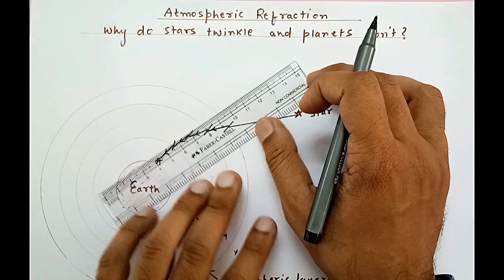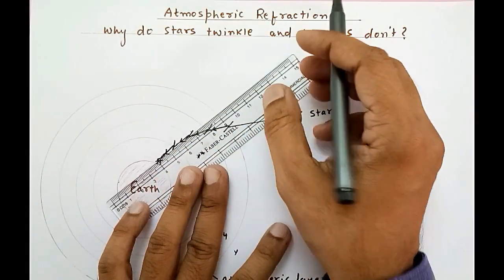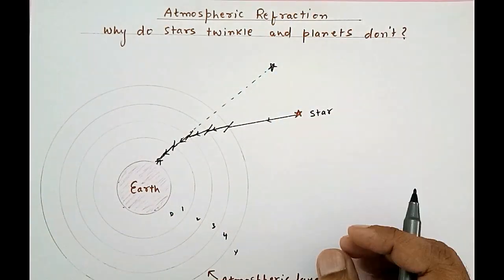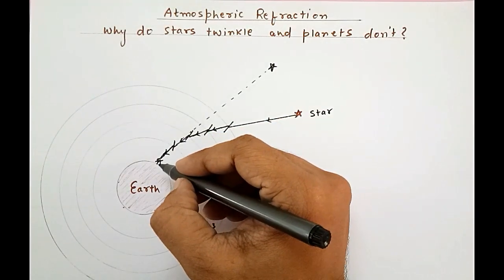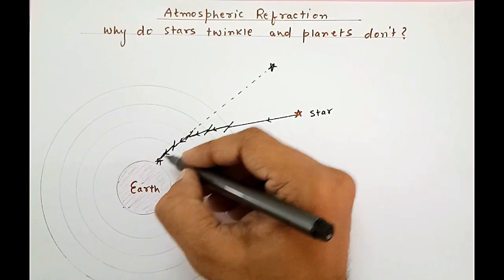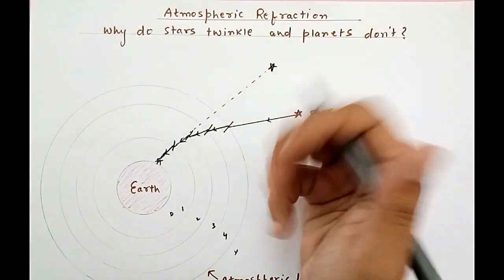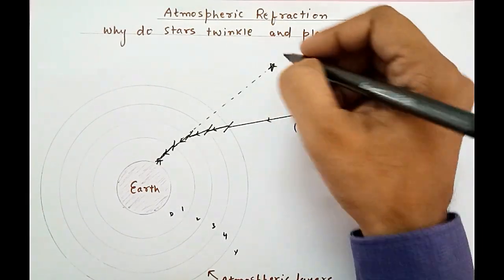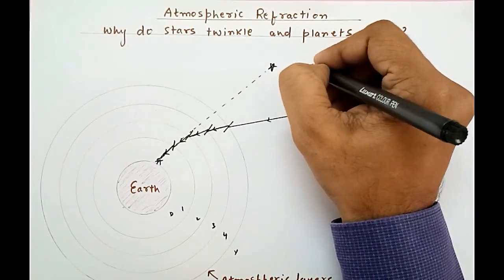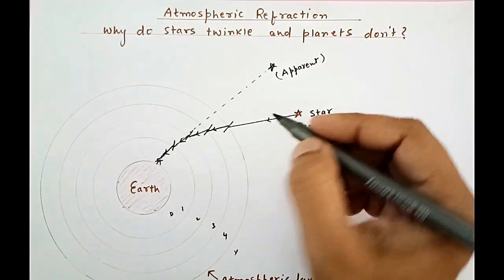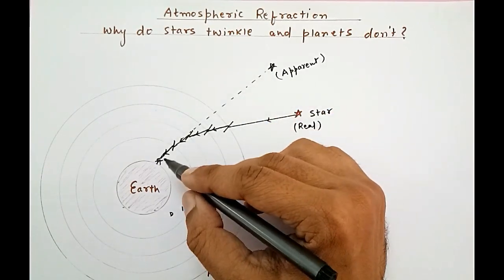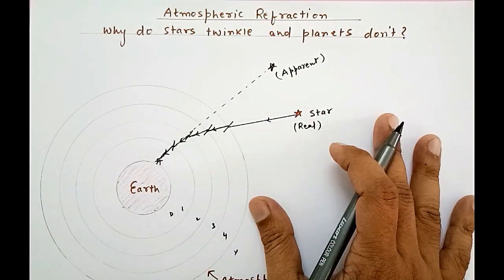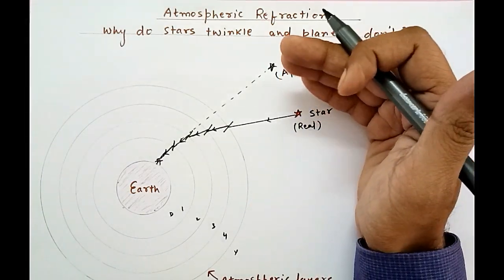This observer will feel that the last ray coming to the eye — if extended in the backward direction — would indicate the position of the star. The observer's brain and eye think the ray is coming from that extended direction, because our brain does not understand refraction. So this is the real position of the star, and this is the image of the star, also called the apparent position. The star appears where it is not actually present due to refraction.